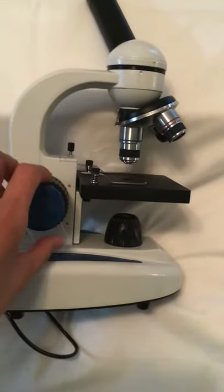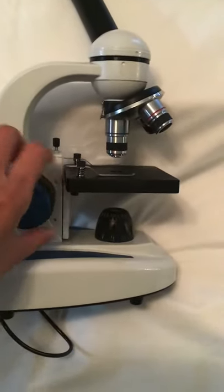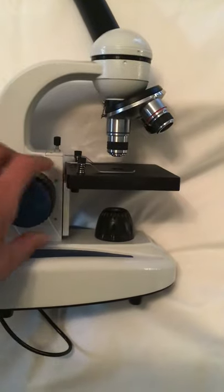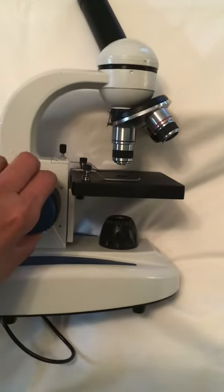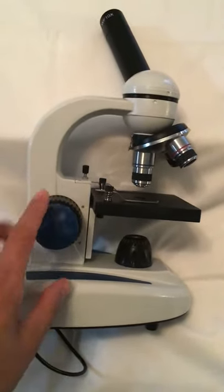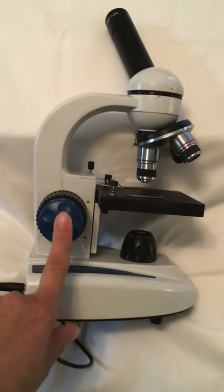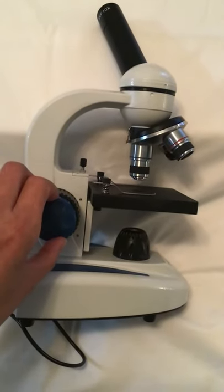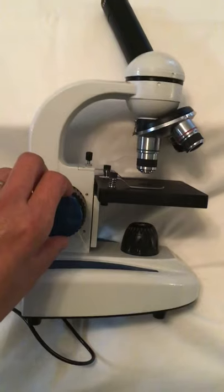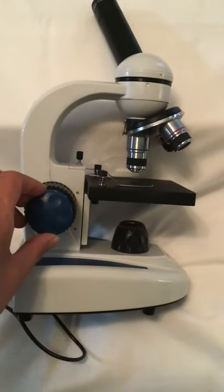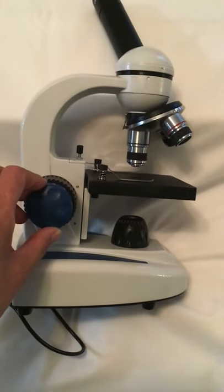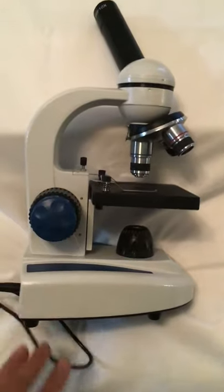Once you have set your slide on there and you've got it to the lens that you want to examine your specimen through, you will then use the fine adjustment. As the term implies, it fine-tunes the image. So you just kind of rotate it back and forth until your object is crystal clear.